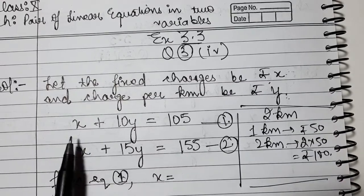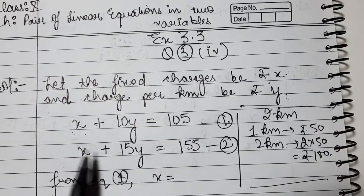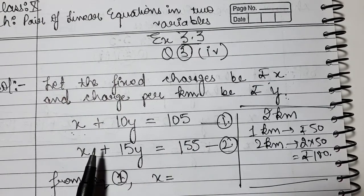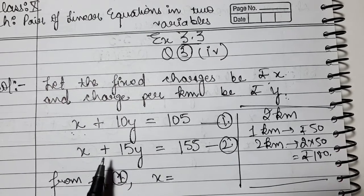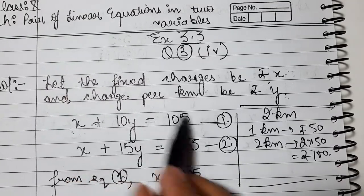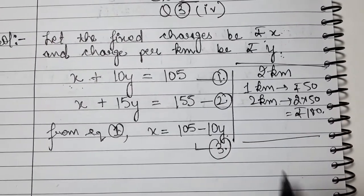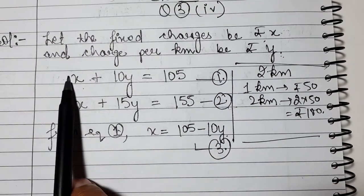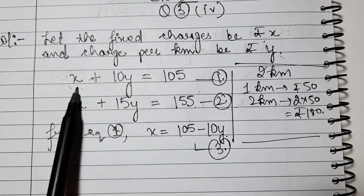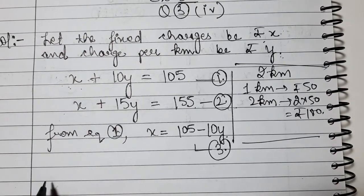From equation number 1: x has coefficient 1, so we keep x on one side and shift the rest to the other side. x equals 105 minus 10y. Mark this as equation number 3. This x value we will put in the second equation. If you take the value from the first equation, put it in the second.